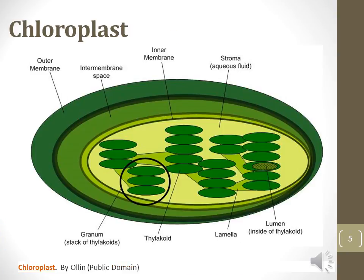This is a diagram of chloroplasts, which are organelles found in the cells of plants. The chloroplast contains an outer and inner membrane, as well as a stroma similar to the cytoplasm, and stacks of thylakoids.